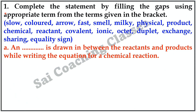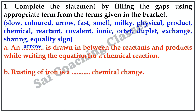This is Question 1. Complete the statements by filling the gaps using appropriate terms from the bracket. A. A dot dot is drawn in between the reactants and products while writing the equation for a chemical reaction. Answer: Arrow.